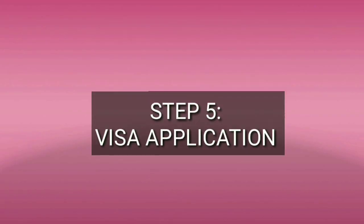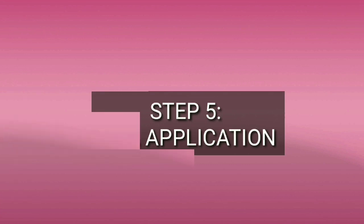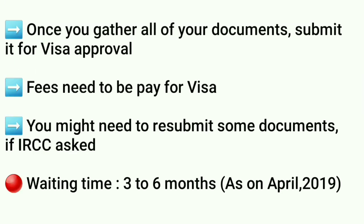The next step is the visa application. Once you gather all the documents mentioned previously, you have to submit them to IRCC for permanent residency visa approval. You have to pay your application fee at this point, which contains your visa fee and the right of permanent residency fee. If IRCC finds something unclear in your application, they will ask you to resubmit some documents for clarification. Once you have applied, keep your eye on your account inbox — typical application approval time is 3 to 6 months as of now.